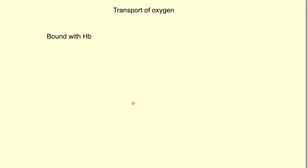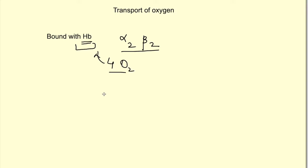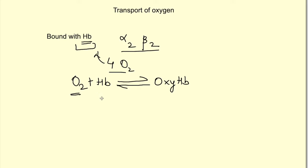Adult hemoglobin has four chains: two alpha chains and two beta chains. Each hemoglobin molecule can bind with four molecules of oxygen. Importantly, this binding is reversible. When oxygen binds with hemoglobin, it forms oxyhemoglobin. When the partial pressure of oxygen is high, hemoglobin preferably binds oxygen; when partial pressure decreases, the bound oxygen is released from hemoglobin.